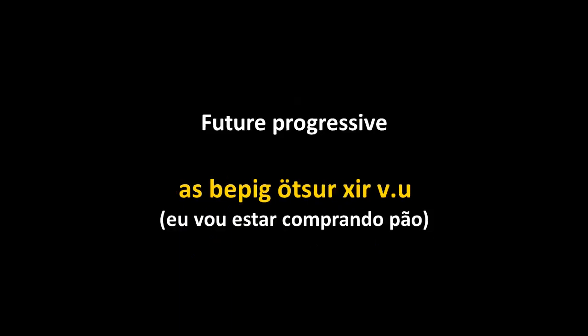There's also a future progressive, which uses the future potential (the -r form), then the hir form derived from the verb hila 'to be,' and then the verb 'to be' conjugated in the past or present at the end. As bepig yurtsur hirvu — 'I will be buying bread.' That's used when you want to insert an action inside another action in the future.